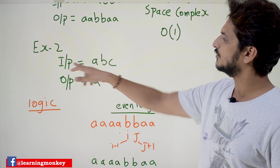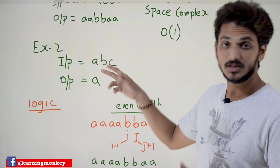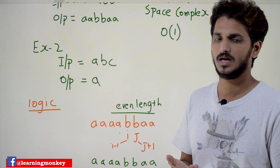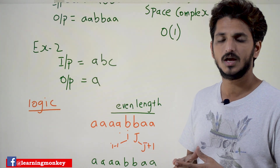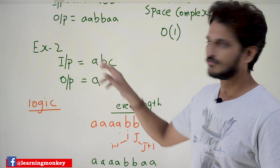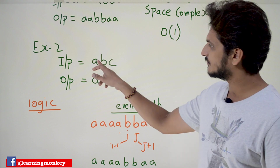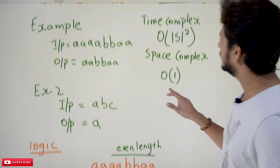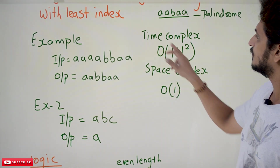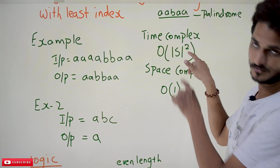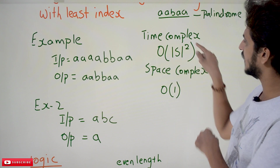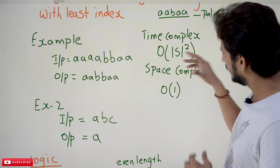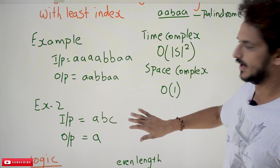Example 2: input is ABC. In this example, we don't have any substring that contains palindromes. In this situation, we have to display the first character, which is A. It was also given that you have to maintain a time complexity of O(n²) and space complexity of O(1). Based on this, you have to write the code.